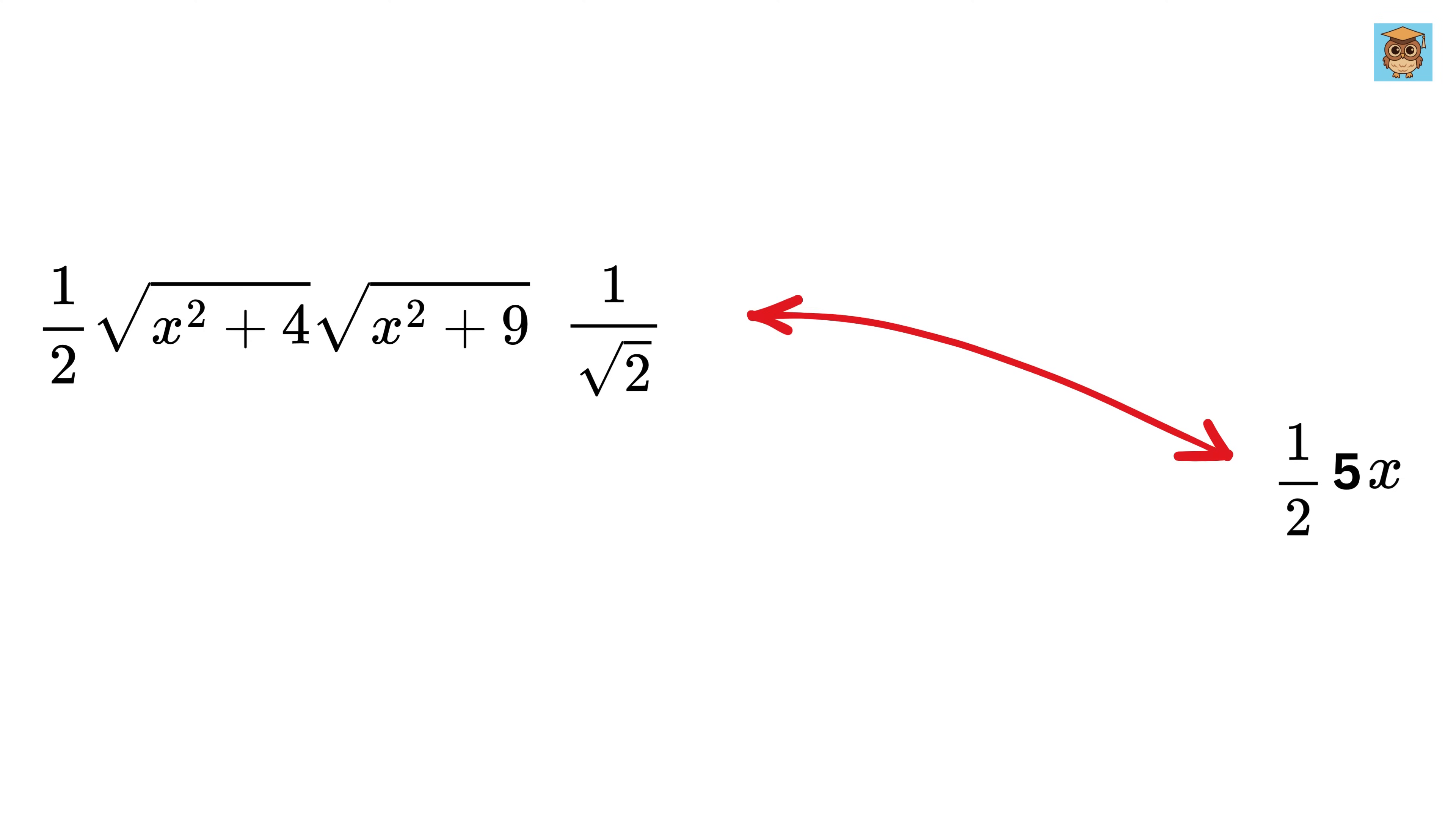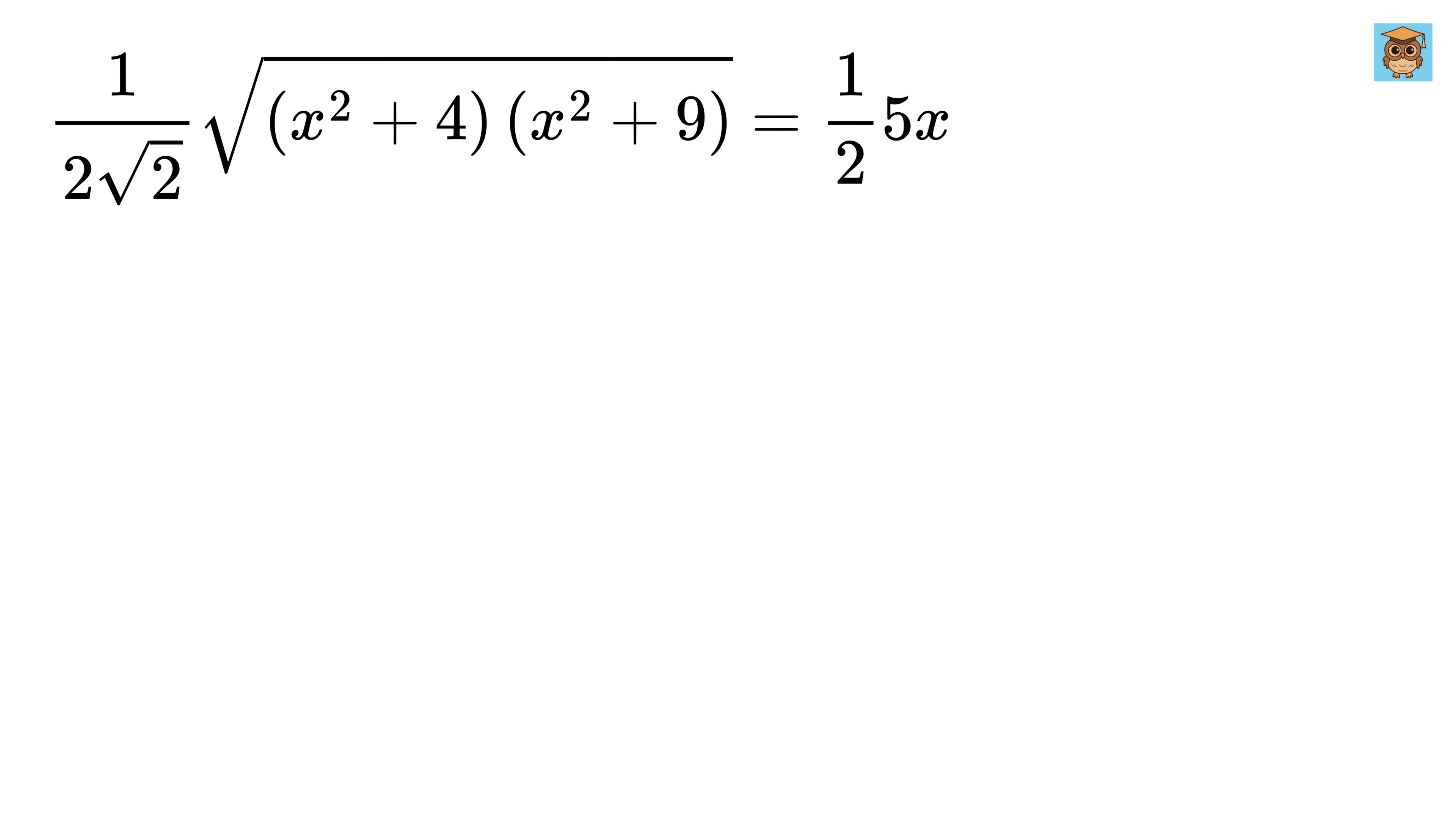Since both of them are equal to the area of this triangle, equate them to get this. First, cancel out this 2 from both sides and then take root to this side like this.